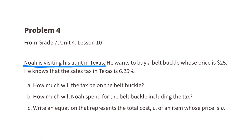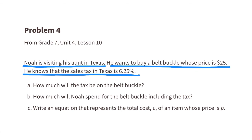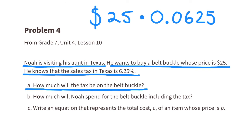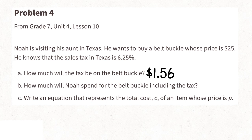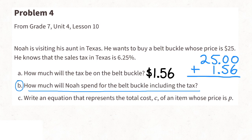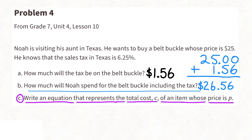Problem number four from 7th grade unit 4, lesson 10. Noah is visiting his aunt in Texas and wants to buy a belt buckle priced at $25. The sales tax in Texas is 6.25%. Part a: the tax is $25 times 0.0625. Part b: the total Noah would spend is $25 plus the tax — he would spend a total of $26.56.